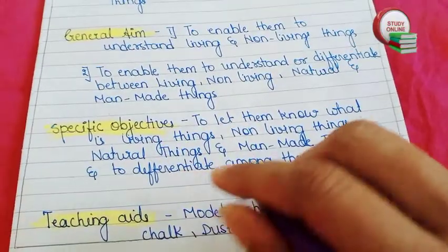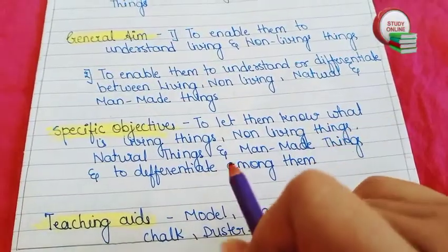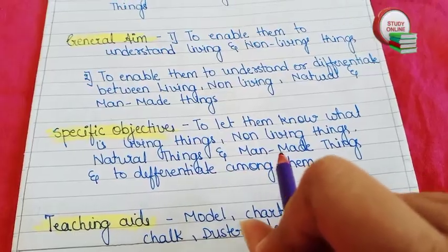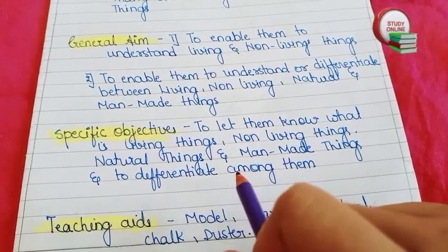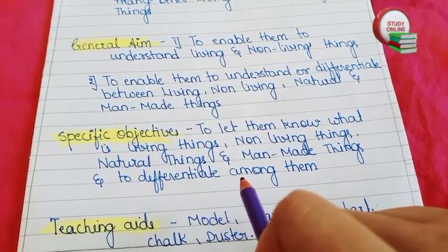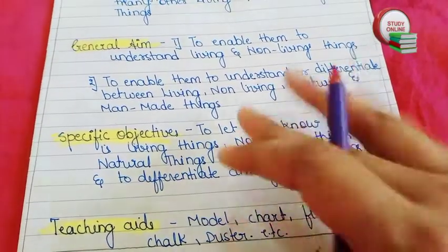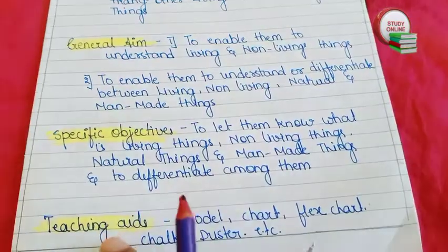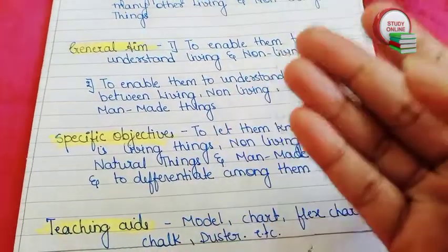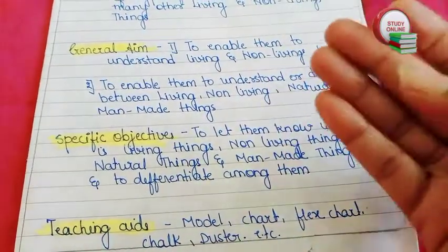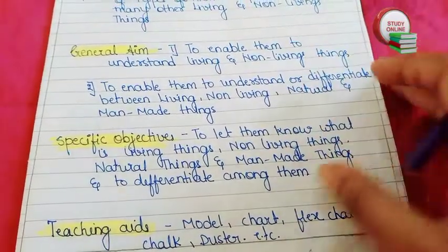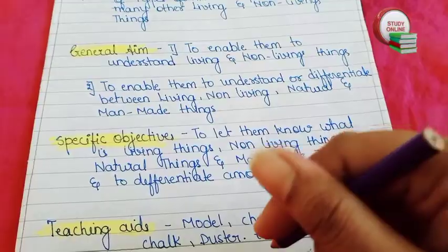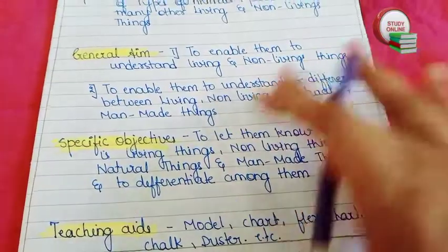For specific objectives, you can see we have to write: to let students know what are living things, non-living things, natural things, and man-made things, and to differentiate among them. For teaching aids, whatever teaching aids you are going to use, you have to mention all of them here.